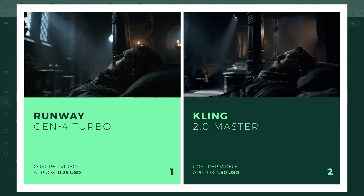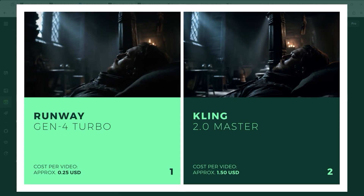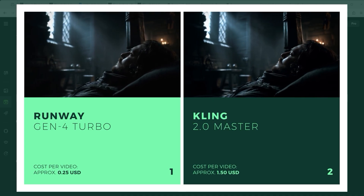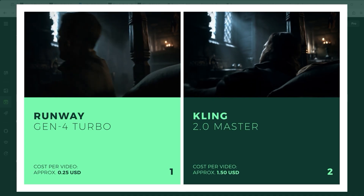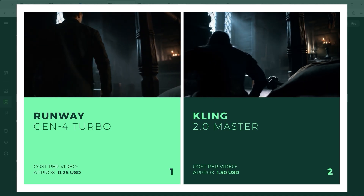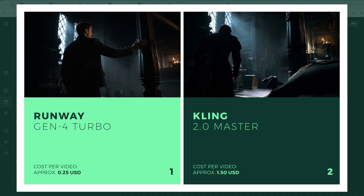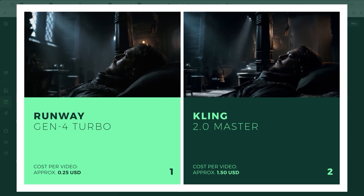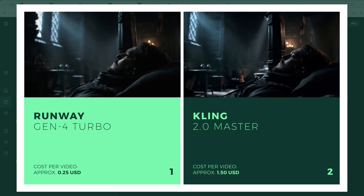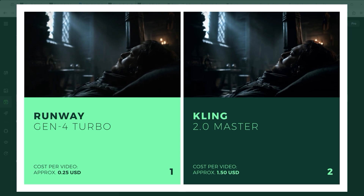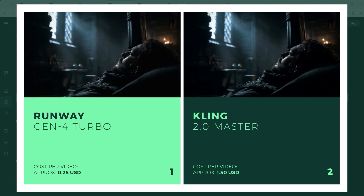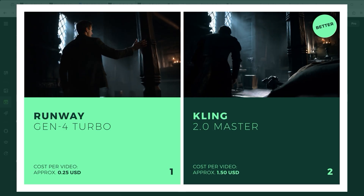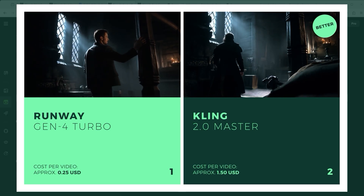Who doesn't know the legend of fire and ice? Here's an example inspired by Game of Thrones: a fighter of the Northmen sleeps in a dark fortress. First the camera turns slightly around the person, who then gets up and walks to the window. Kling 2.0 does this masterfully and also maintains the consistency of the person.